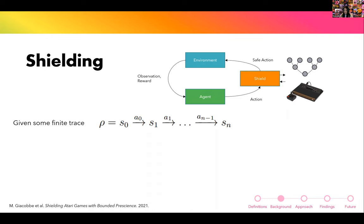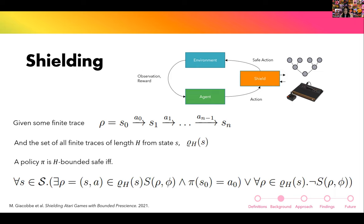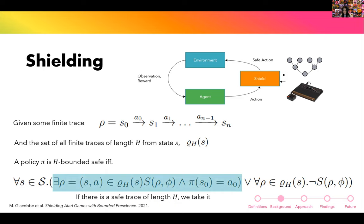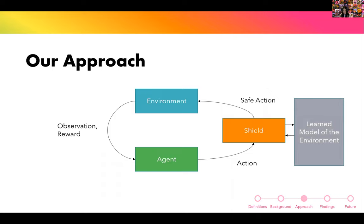Their definition of safety is bounded up to horizon H: given some finite trace of H steps, a policy is safe if and only if, when a safe trace exists, we take it. Otherwise, if there are no safe traces, the horizon simply wasn't big enough — that is the inherent downside of H-bounded safety.